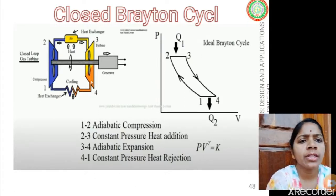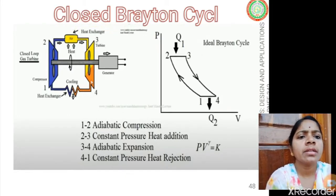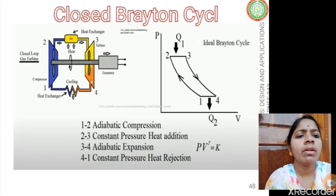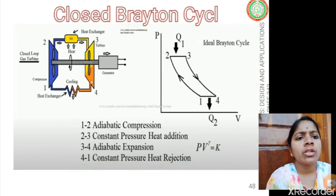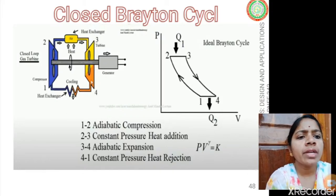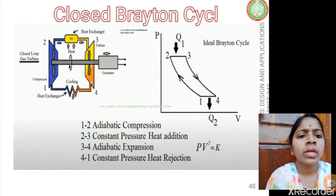In the closed Brayton cycle, air enters the compression pump where pressure and temperature increase. The high-pressure air moves to the combustion chamber where heat from outside is added — external ignition can be done. The heated air is circulated to the turbine where volume change causes expansion and runs the turbine. The compressor and expander share a common shaft, and a generator connected to the turbine produces electricity. After expansion, the gas goes to a cooling condenser where the air is cooled and recycled — hence it is a closed cycle.